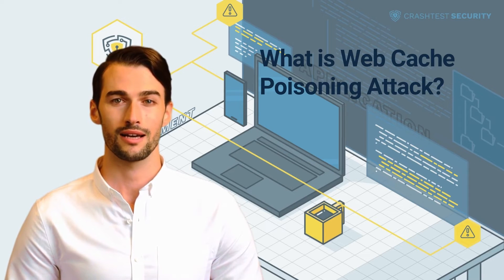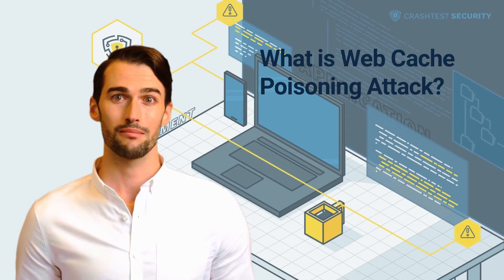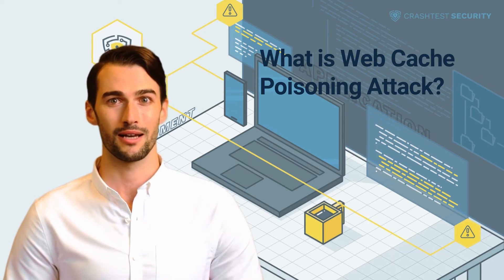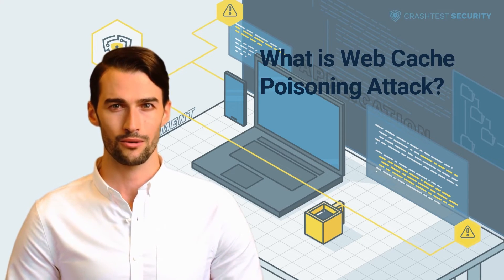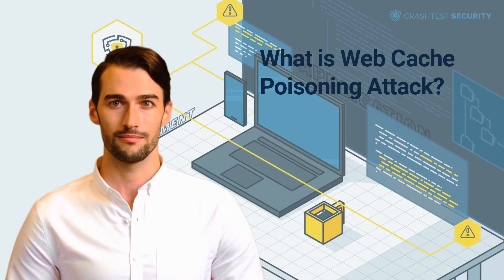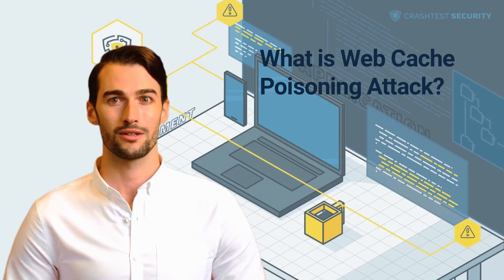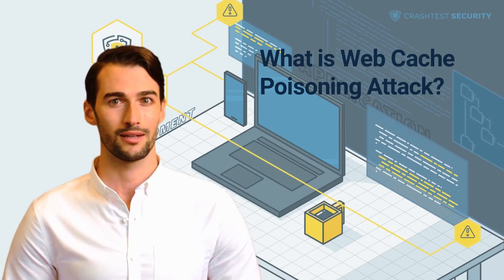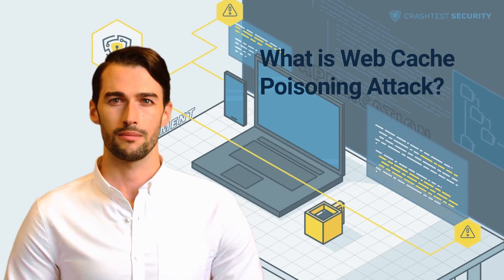Evoking the harmful response requires the malicious actor to understand how the web server processes the unkeyed input to elicit a malicious reaction successfully. Web cache poisoning attacks are only possible when these inputs can be used to generate other responses dynamically, or if the server reflects this input in its response without adequate validation or input sanitization. The success of a web caching attack also depends on the successful storage of the harmful response in cache memory.